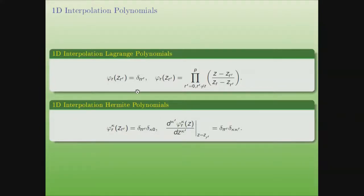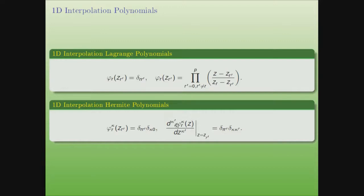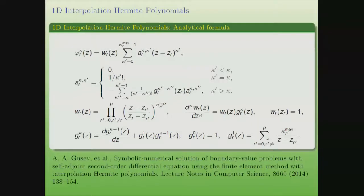In the one-dimensional case, the Lagrange interpolation polynomials obtained by values on some sub-grid are calculated by a known analytical form, where p is the number of sub-grid elements. In the case of Hermite interpolation polynomials, which give values and derivatives up to a given order, they are also calculated analytically.